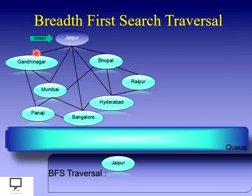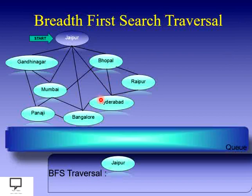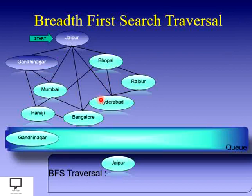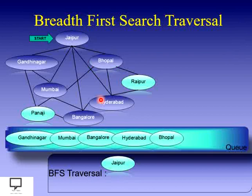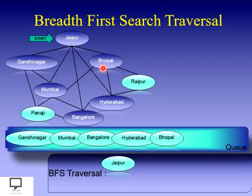Jaipur is connected to Gandhinagar, Mumbai, Bangalore, Hyderabad, and Bhopal. After inserting all these nodes into the queue, they are marked as visited. We mark them as visited because the graph is a data structure where nodes are connected differently — if we don't mark them, we will never know whether a vertex has already been inserted into the queue or not.